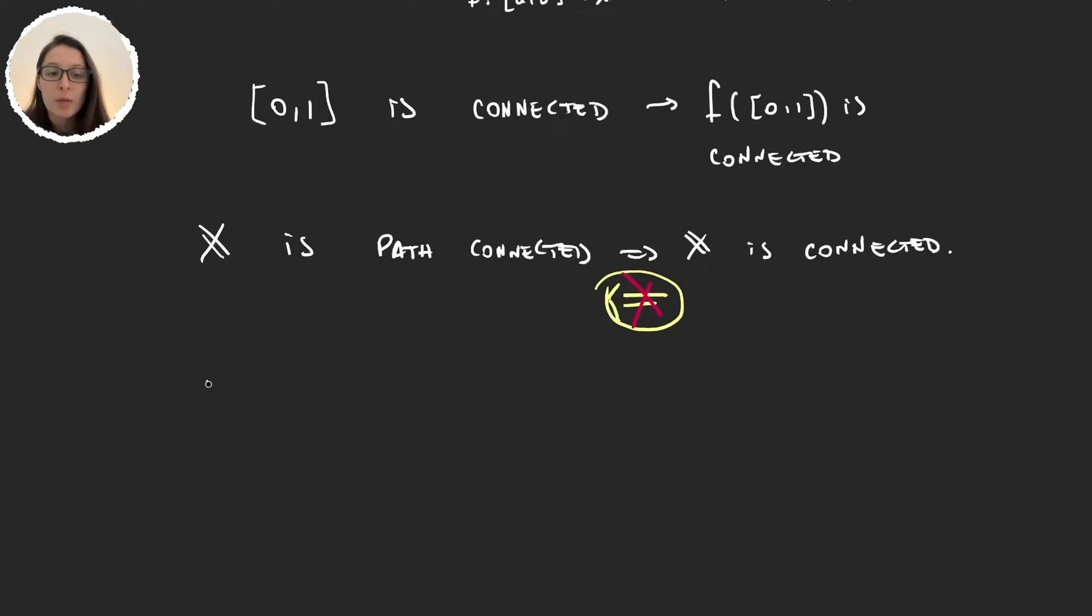For this we know that the order squared is connected. Remember that the order squared was [0,1] × [0,1] with the dictionary order. If you don't remember about this set then I recommend you look at the video we have on the order topology.